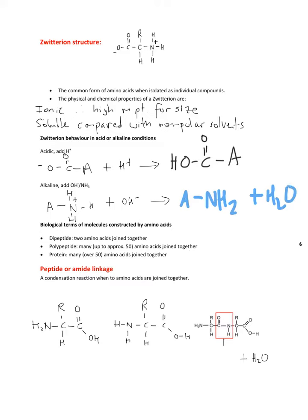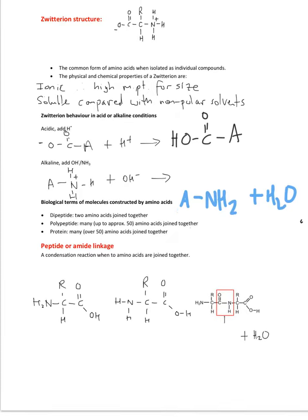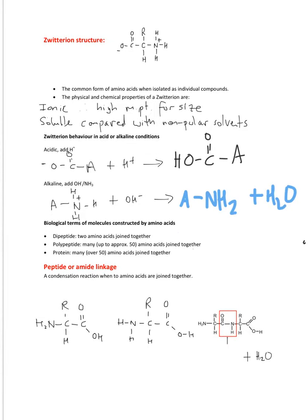There's just a few biological terms. Dipeptides is where two amino acids join together. Polypeptides is many amino acids joined together, for example, up to 50 amino acids are joined together. And a protein is many, i.e. over 50 amino acids. There's just a ballpark region for those figures.